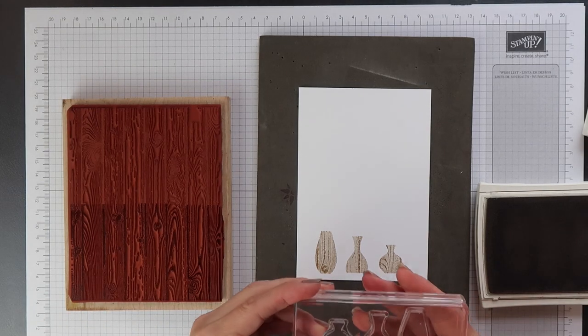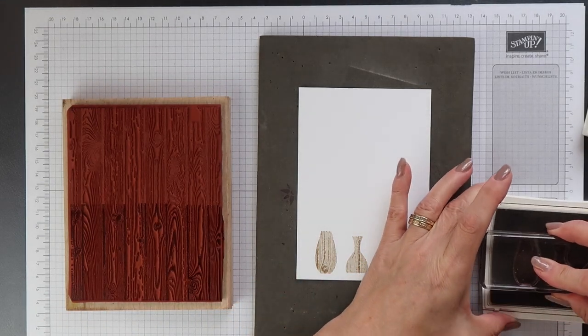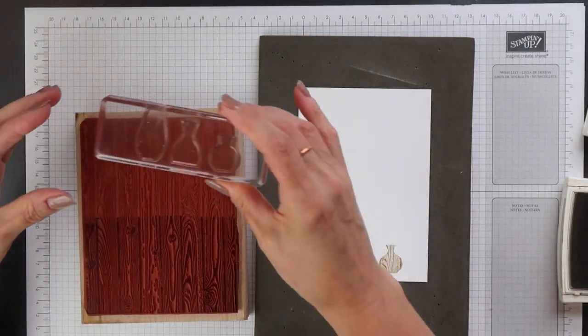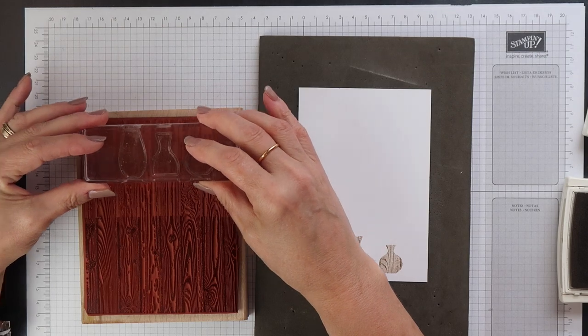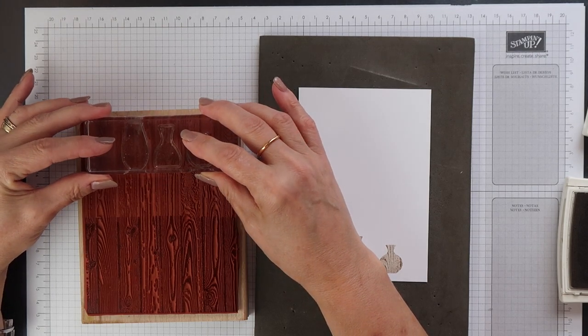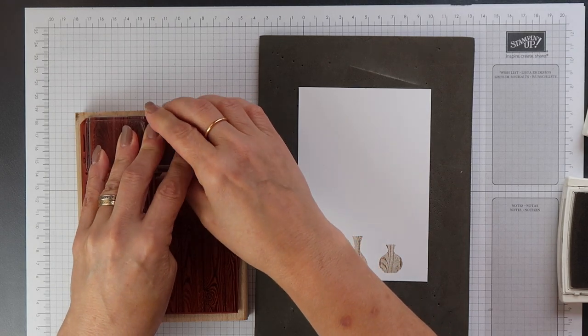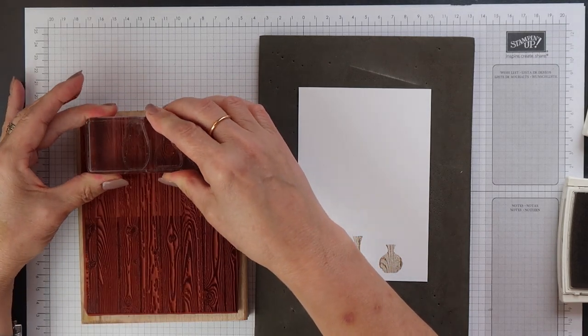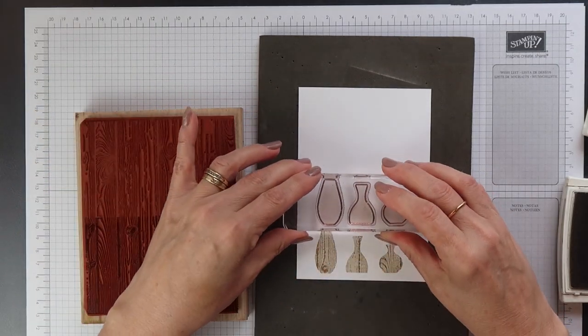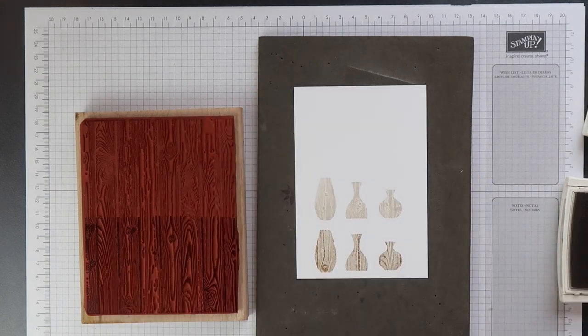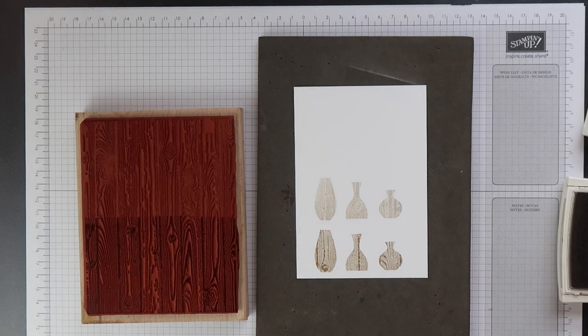For a slightly different effect you can ink up your solid stamp. Again I'm using Sahara Sand and then this time instead of inking up my pattern stamp I've just left it and I'm kissing my solid stamp into the pattern stamp so there's no ink on that hardwood stamp, holding it in place and then I can stamp that down and you get a slightly different look.